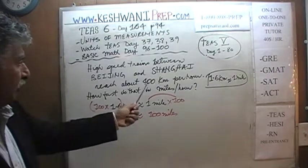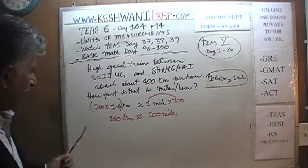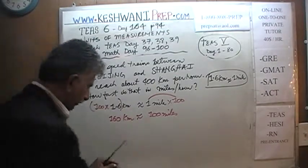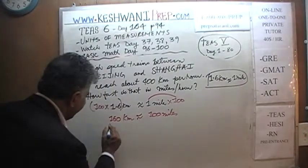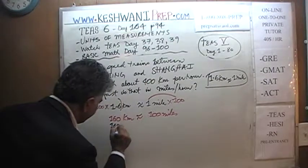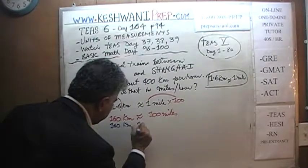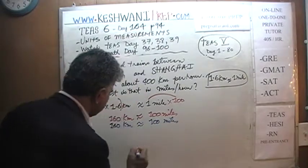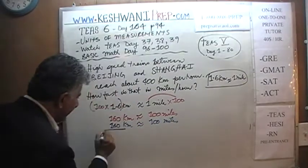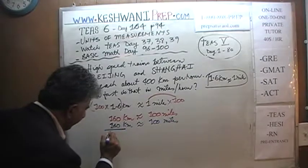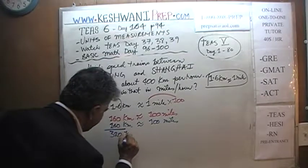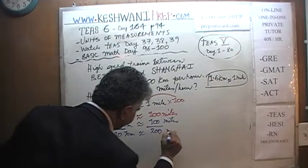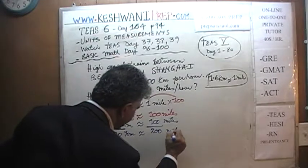We are still nowhere close to 400. Let's add another 160 to it — which is another 100 miles. If we add them up, we get 160 plus 160 is 320. So 320 kilometers is approximately 200 miles.